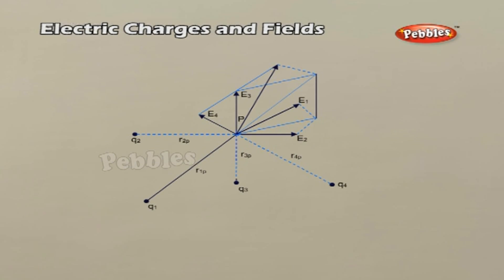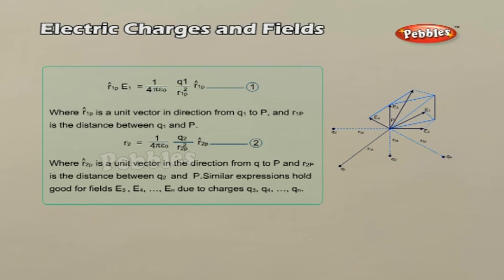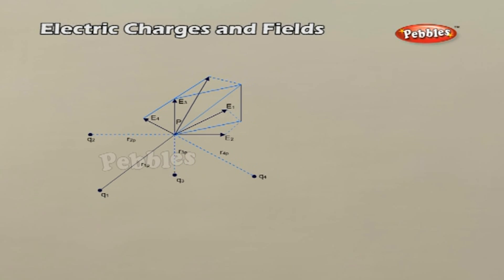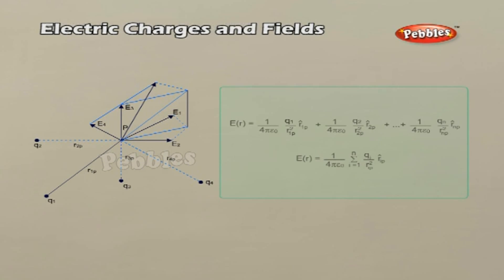Electric Field Due to a System of Charges. Consider a system of charges Q1, Q2, and so on till Qn with position vectors R1, R2, and so on till Rn relative to some origin O. The electric field at a point in space due to the system of charges is defined as the force experienced by a unit test charge placed at that point without disturbing the original positions of the charges. Using Coulomb's law and the superposition principle, the electric field E at point P (position vector R) is E(R) = E1(R) + E2(R) + ... + En(R). E is a vector quantity that varies from point to point in space.